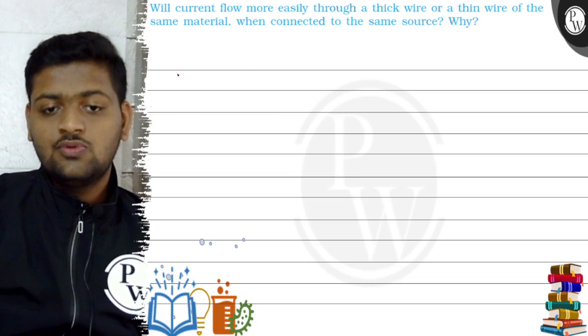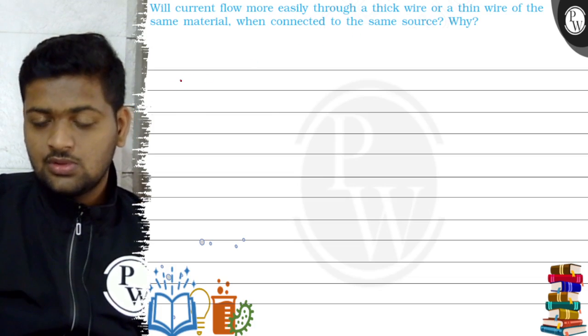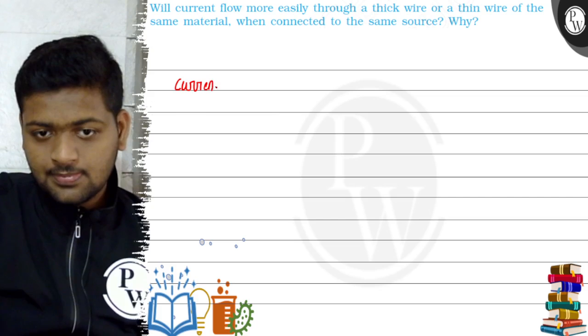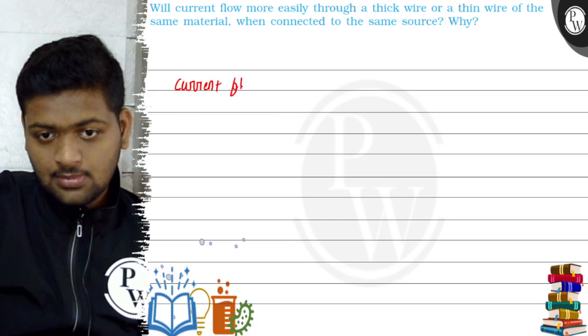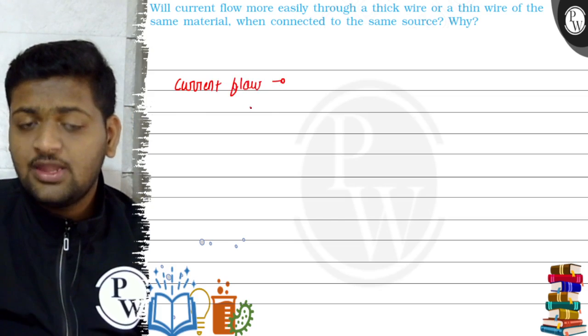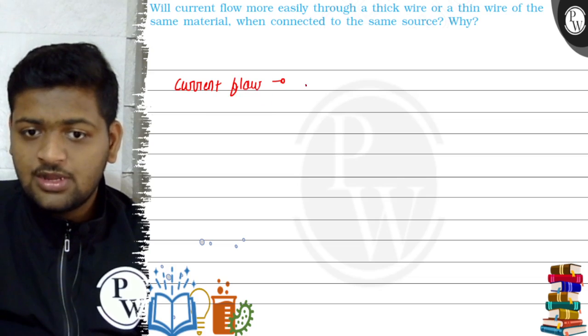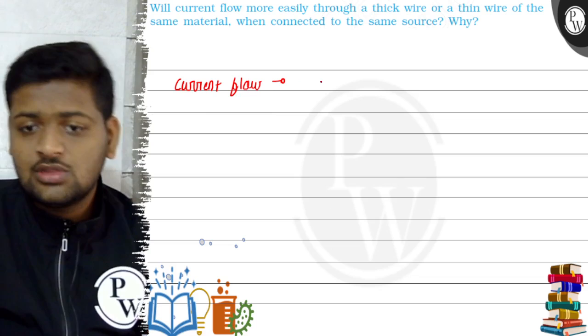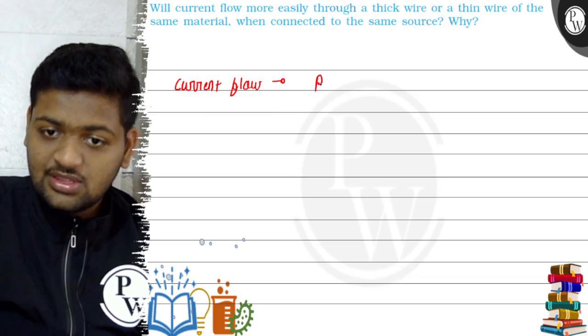They are asking through which current will flow easily. Now current flow can be found out with the help of which particular term? There should be a term which we will use to find out whether the current will flow easily or not. So we will use the resistance.